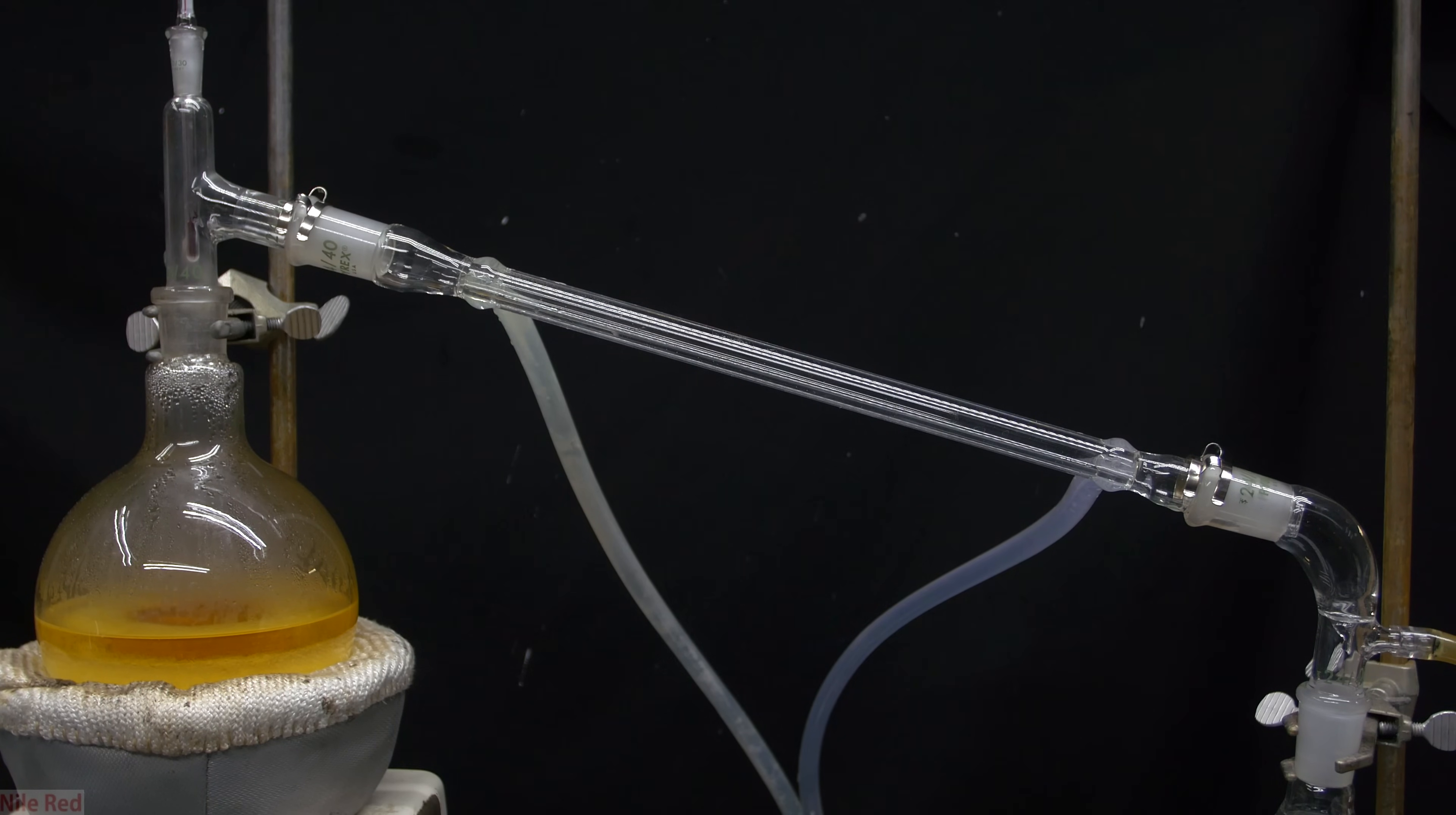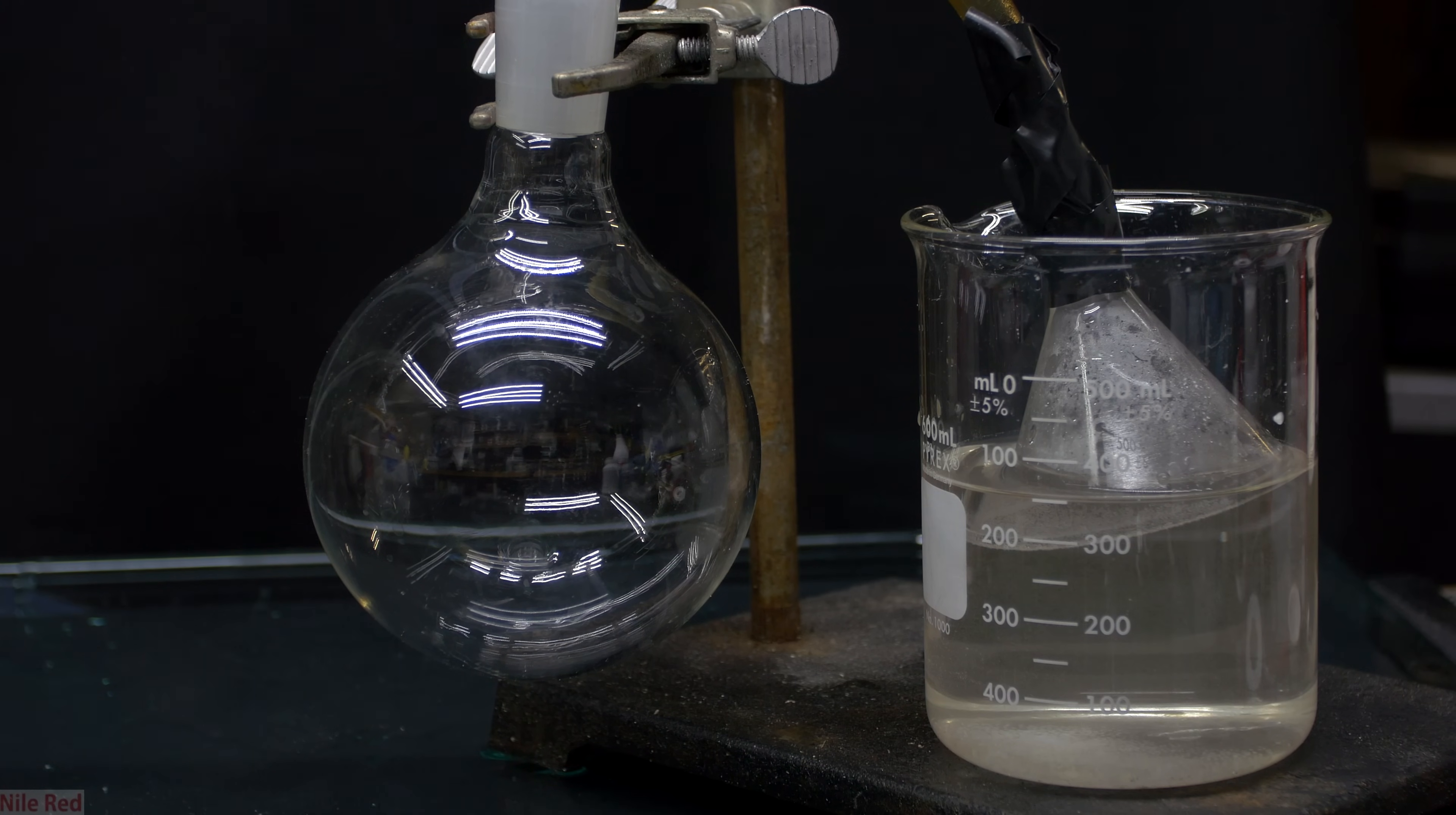I then put together a simple distillation setup and what we're going to try to do is distill off the nitric acid. On the right side I've set up a little sodium hydroxide trap to collect any nitric acid vapors that might escape.